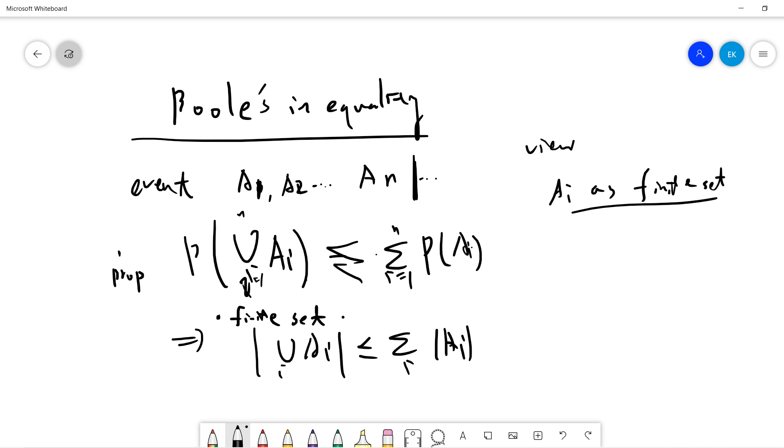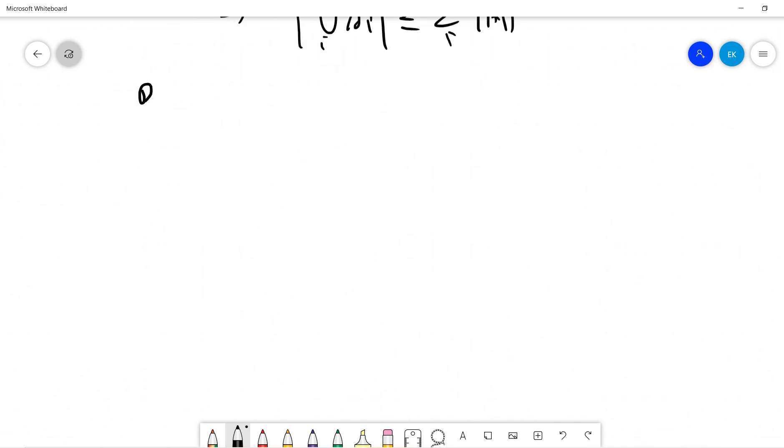So let's give a proof and see some insights. If I want to prove it, usually I will prove by induction. n equals one is trivial: P(A1) just equals P(A1) because union of A1 is only A1.